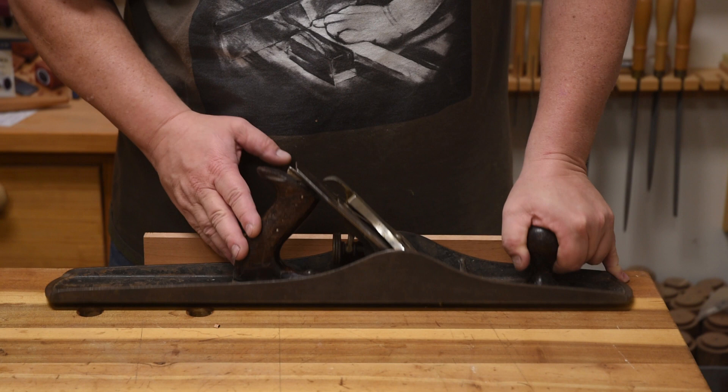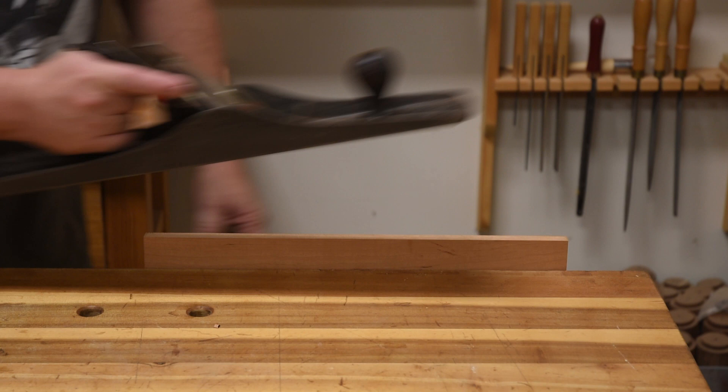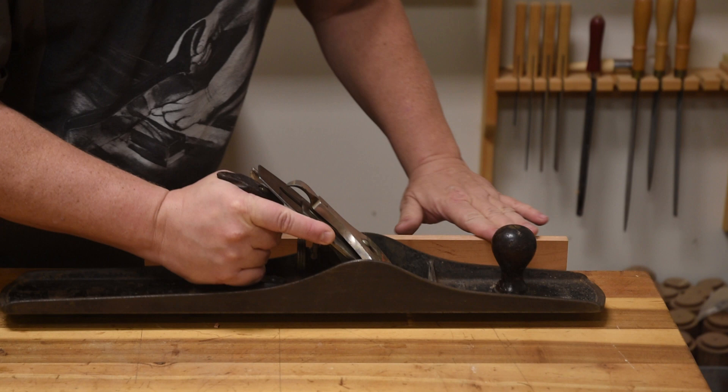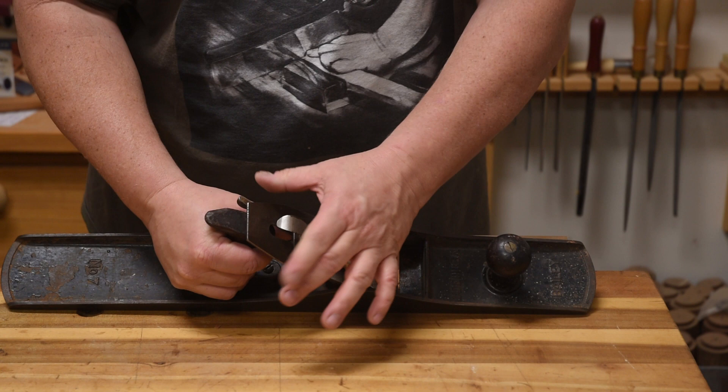This right here is a Bailey number 7, and they also make a number 8, which is quite a bit longer and heavier. And the idea is you just start on one end, push it off the other, and you go until you get solid shavings to get a very straight board.